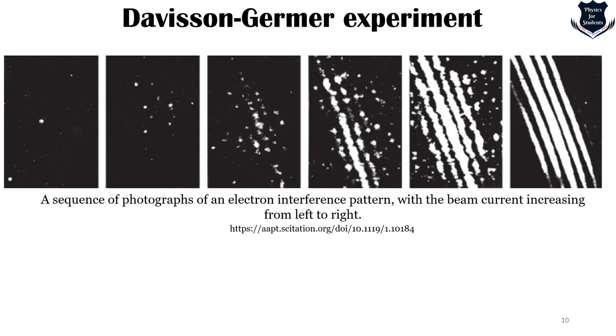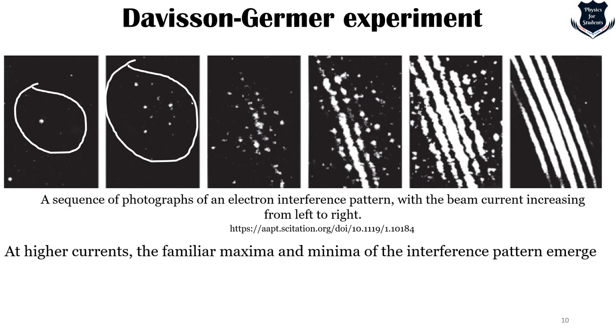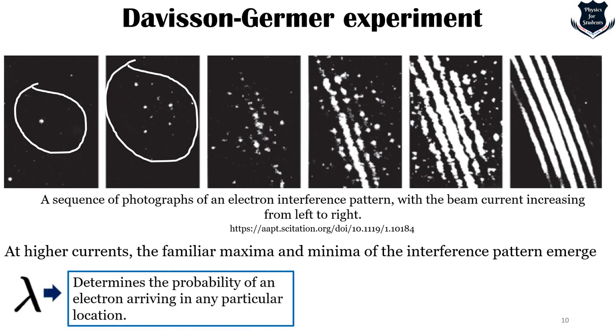This is a sequence of photographs taken from the American Association of Physics Teachers citation. Diffraction experiments with particles are extremely odd because each particle can land on the detector in any place. In this figure you see a sequence of actual photographs from a two-slit interference experiment with electrons, with the beam current increasing from left to right. At low beam currents you can see distinct blips or dots left by individual electrons on the detection screen in apparently random locations.